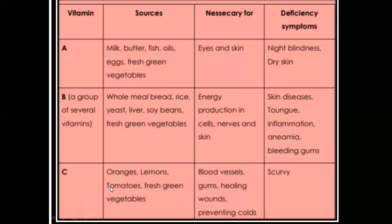Vitamin C is present in oranges, lemons, tomatoes, and fresh green vegetables. It is important for blood vessels, gums, healing wounds, and preventing colds — if someone has a cold, doctors recommend eating more oranges because they contain vitamin C. Deficiency of vitamin C causes scurvy, which is a skin disease, and also gum disease.